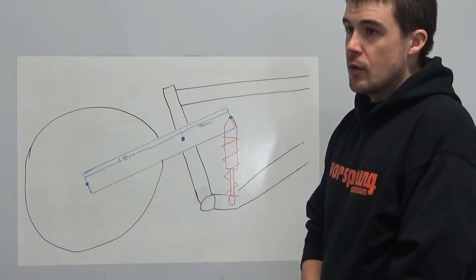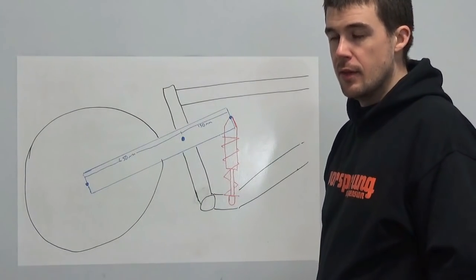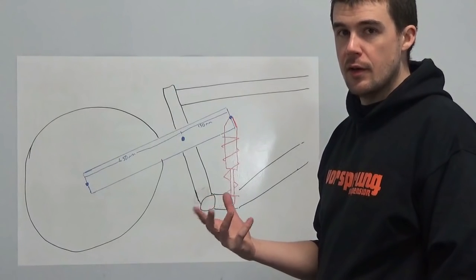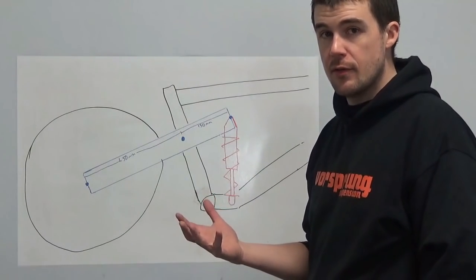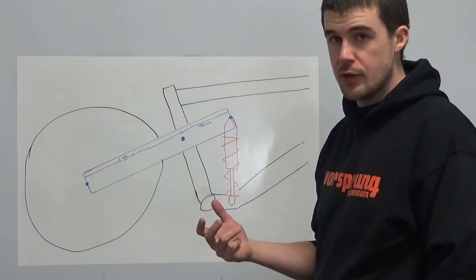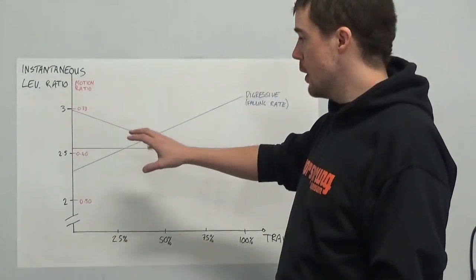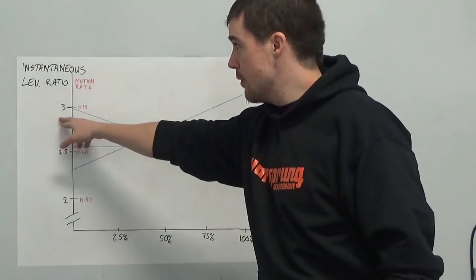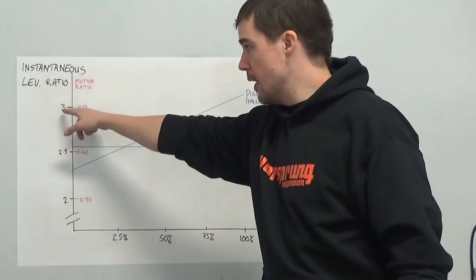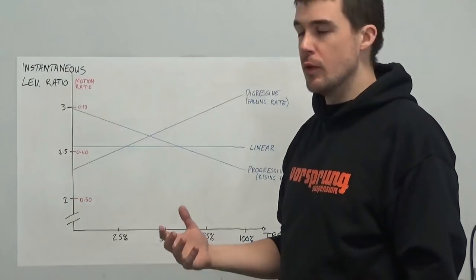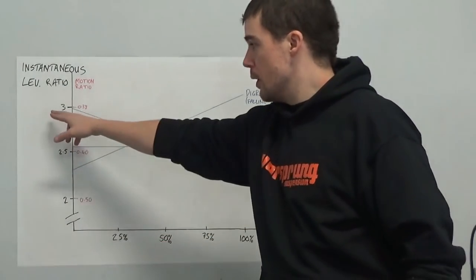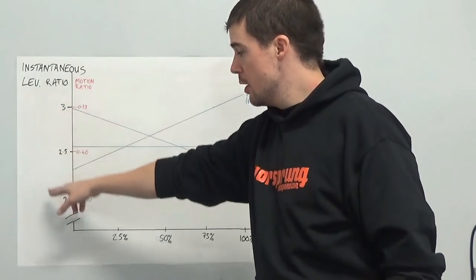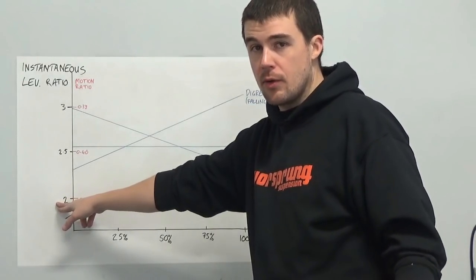This quadratic relationship between the leverage ratio and spring and damping rates gives us a very good idea of why bikes become quite sensitive to small changes in the leverage ratio. On this graph we have a few different curves of leverage rate. On this axis we have instantaneous leverage ratio. I have drawn that from 3 to 2. They're fairly common real-world values that we'll see. Meaning, rear wheel is moving three times as far or as fast as the shock. Rear wheel is moving two times as far or as fast as the shock.